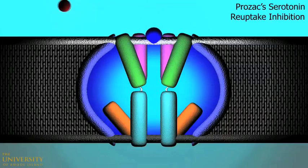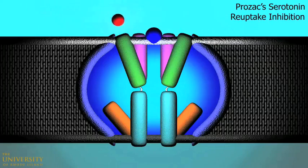Returning to the detailed view of the reuptake protein, Prozac's disabling effects are clear. Serotonin molecules are denied entrance, and the gating mechanism cannot proceed.